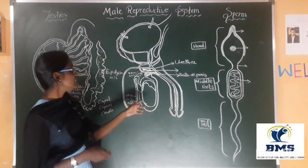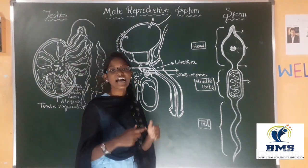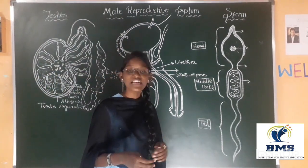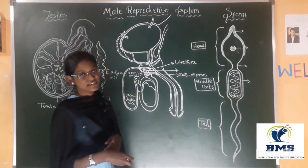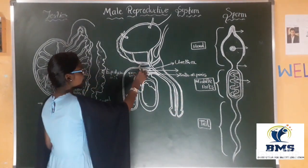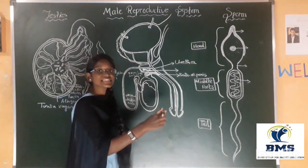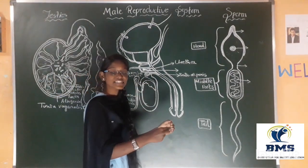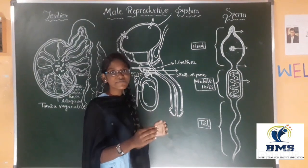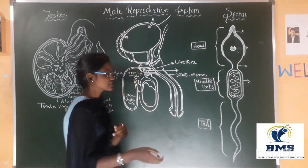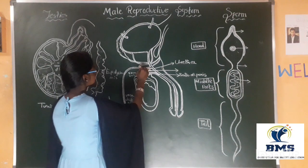After that, when the vas deferens and the seminal vesicle combine, they form the ejaculatory duct. When the vas deferens and the seminal vesicle combine, they form the ejaculatory duct.